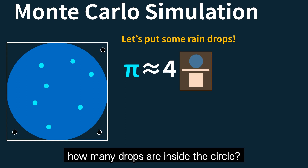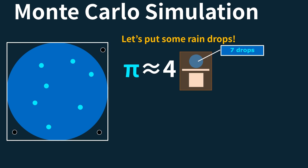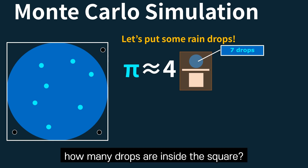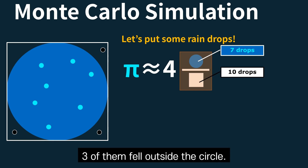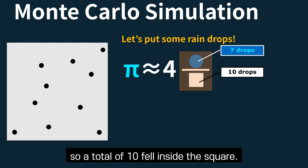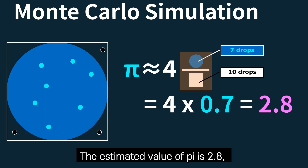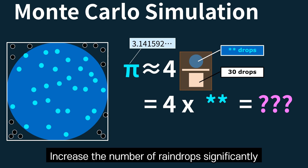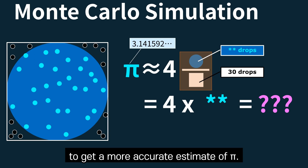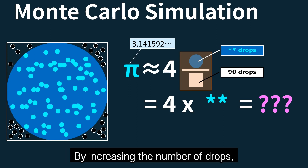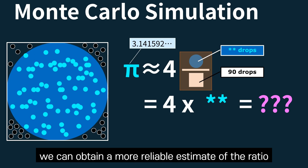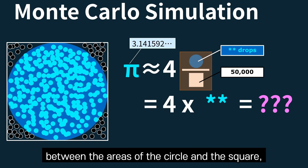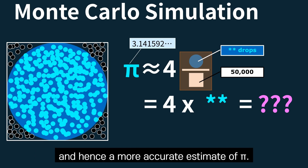Let's put some raindrops inside the square and count them. Seven drops fall inside the circle, and three fall outside the circle, giving a total of 10 inside the square. The estimated value of pi is then 2.8, which is far from the actual value of pi. To improve accuracy, we can increase the number of raindrops significantly, obtaining a more reliable estimate of the ratio between the areas and hence a more accurate estimate of pi.